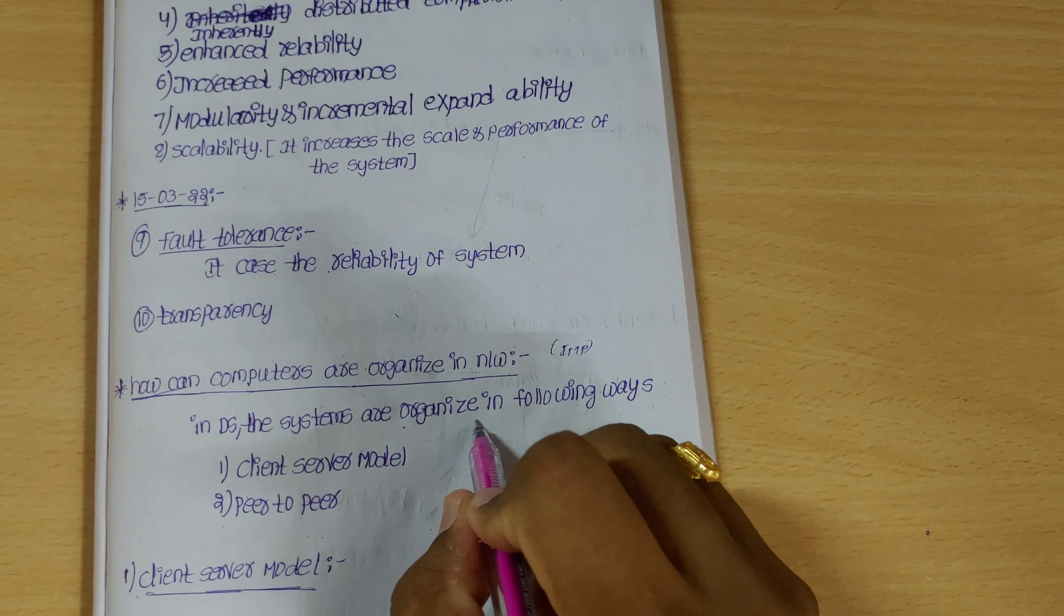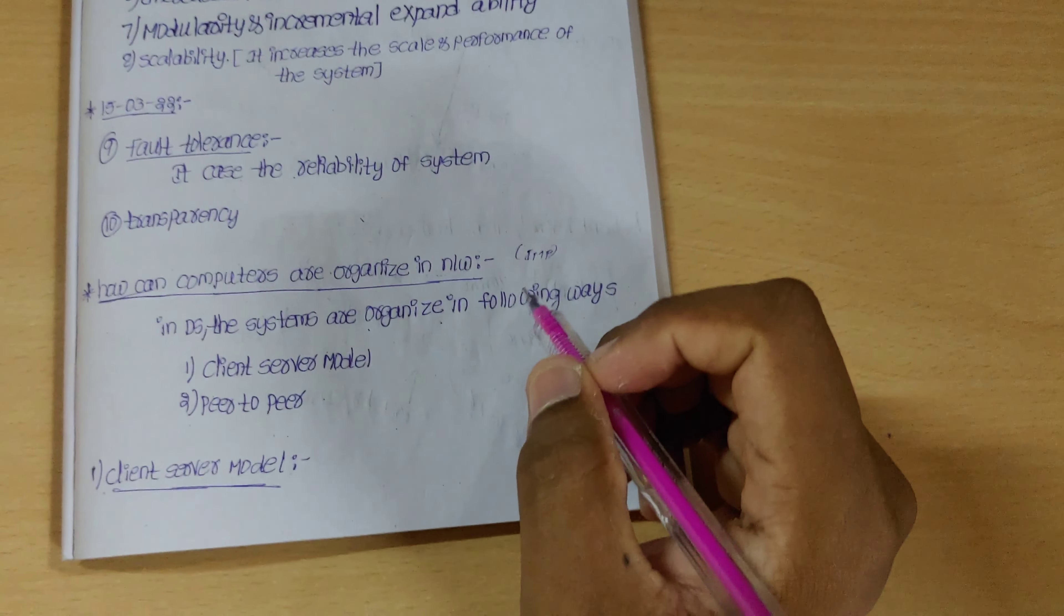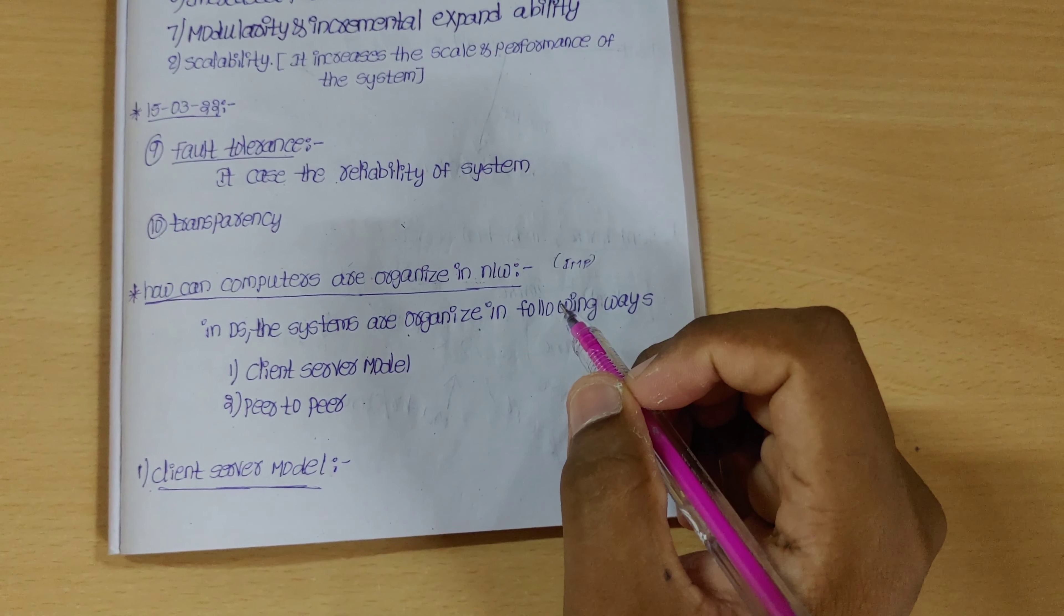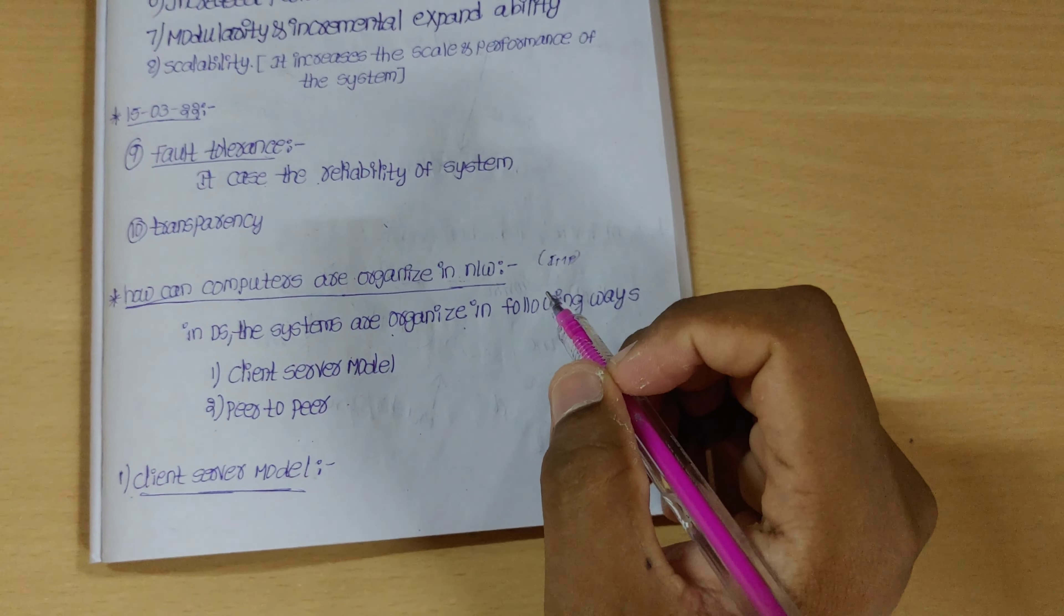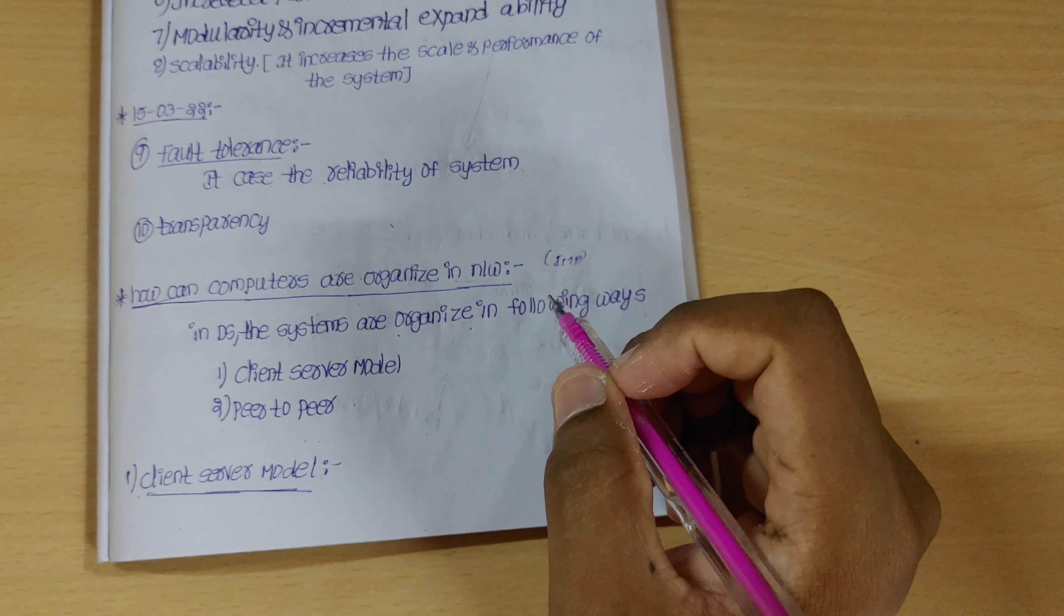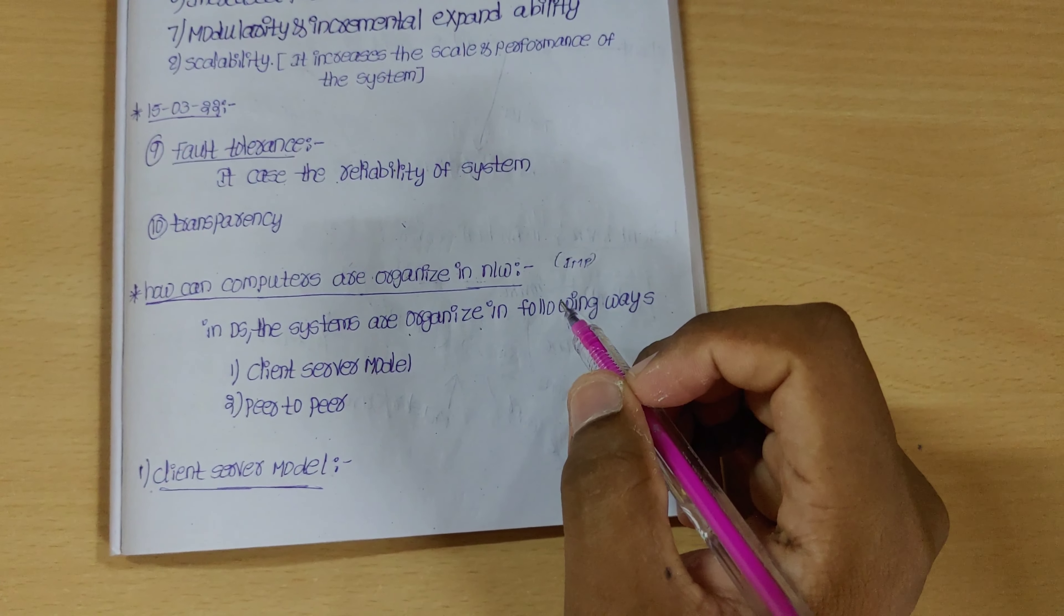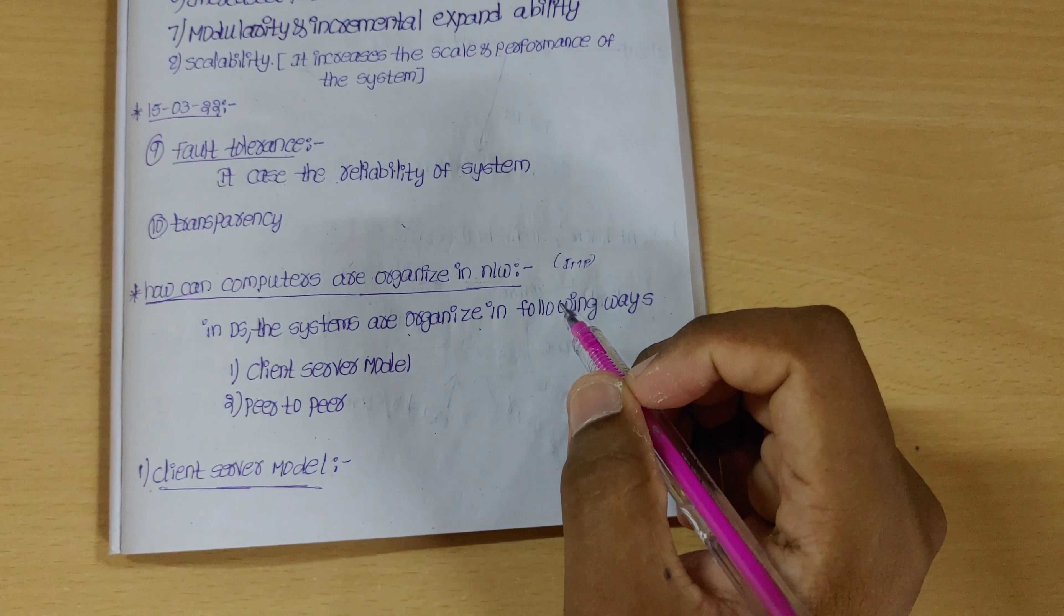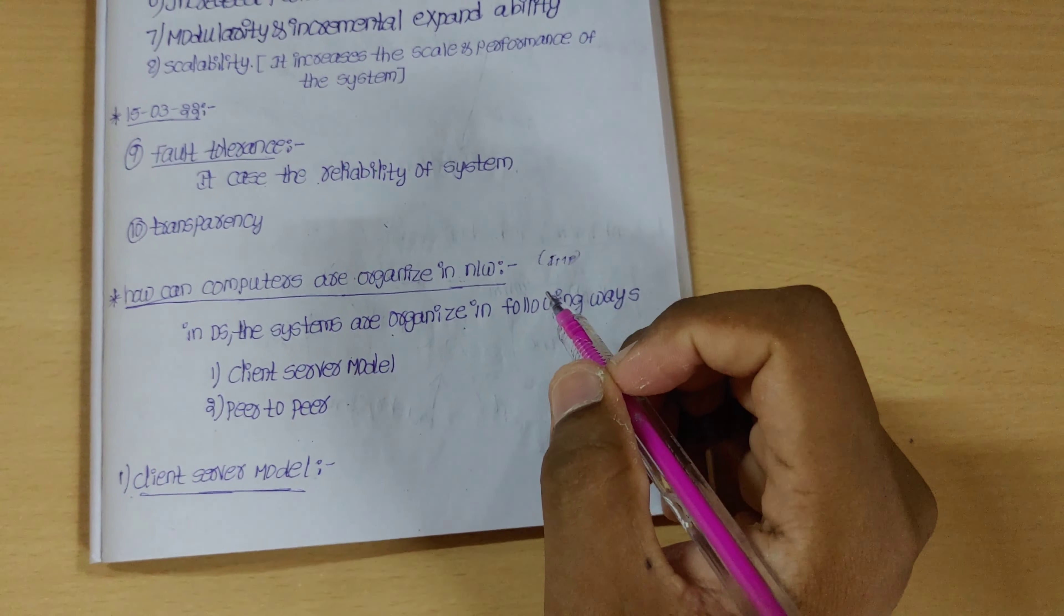Two important models: client-server model and peer-to-peer model. The client-server model - we'll discuss in the next videos later. So if you like the video, please share, subscribe. Thank you so much for watching this video. The description has links - job updates channel link. Please click the subscribe button. Thank you so much for watching, love you guys.